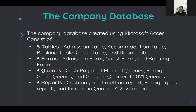For the company database, we are using Microsoft Access. The database consists of five tables: the admission table as a main table, the accommodation table as a main table, and the booking table as a main table, plus connecting tables. The three forms are the admission form, guest form, and booking form. The three queries are: cash payment method query, foreign guest query, and guests in Quarter 4 2021 query. The reports are: cash payment method report, foreign guest report, and income in Quarter 4 2021 report.